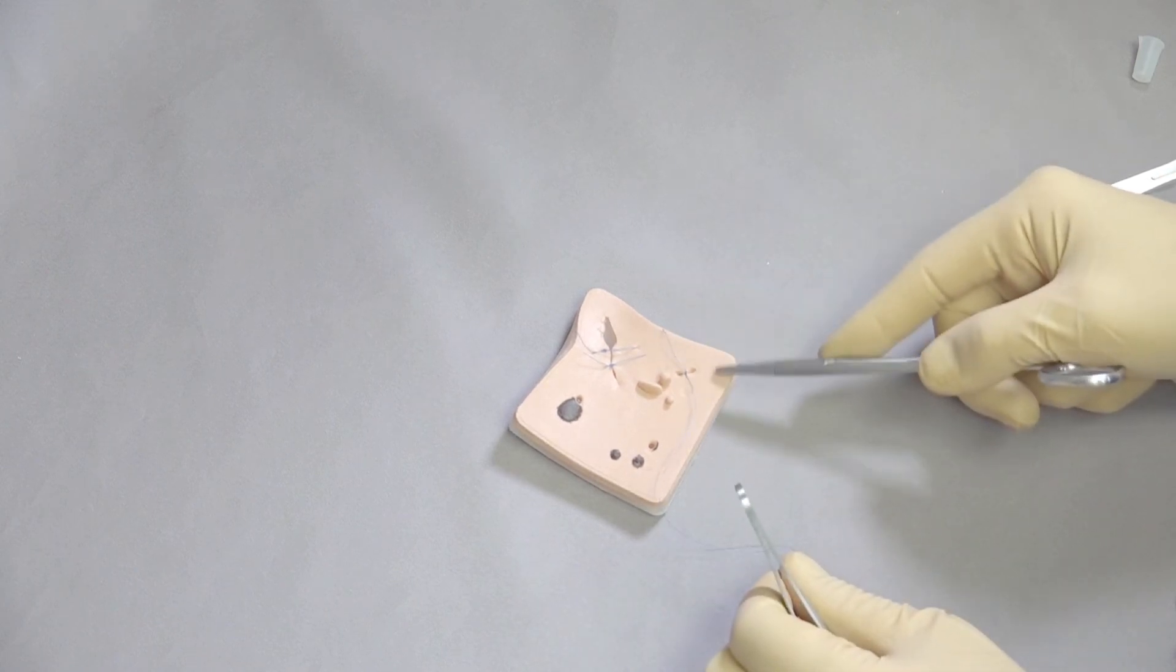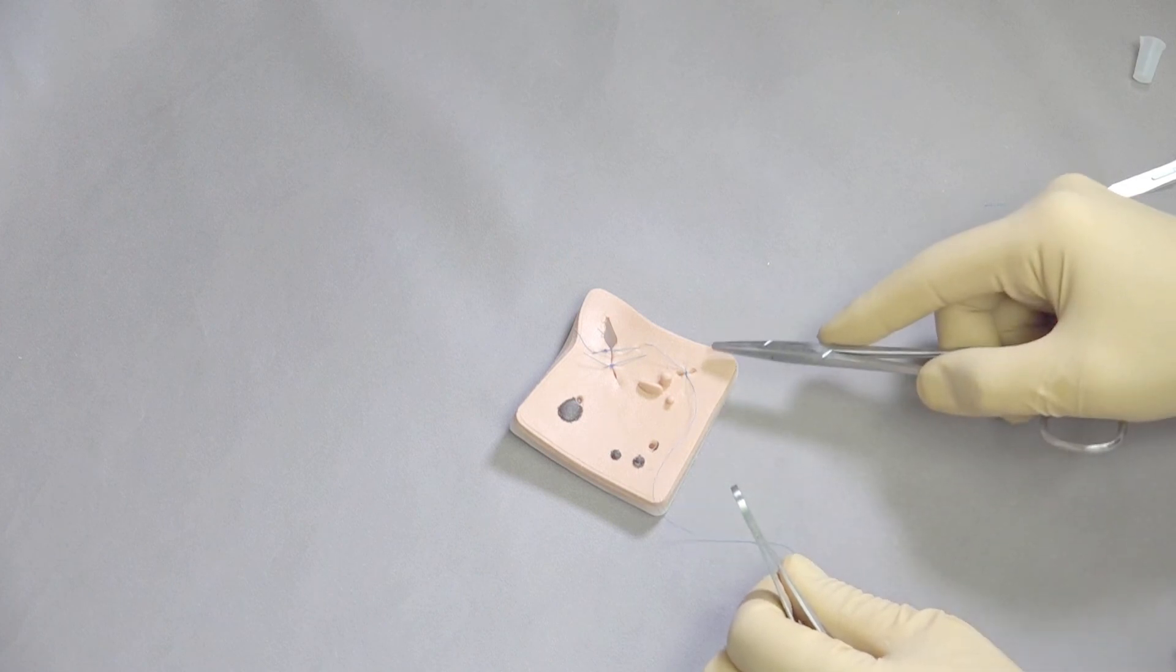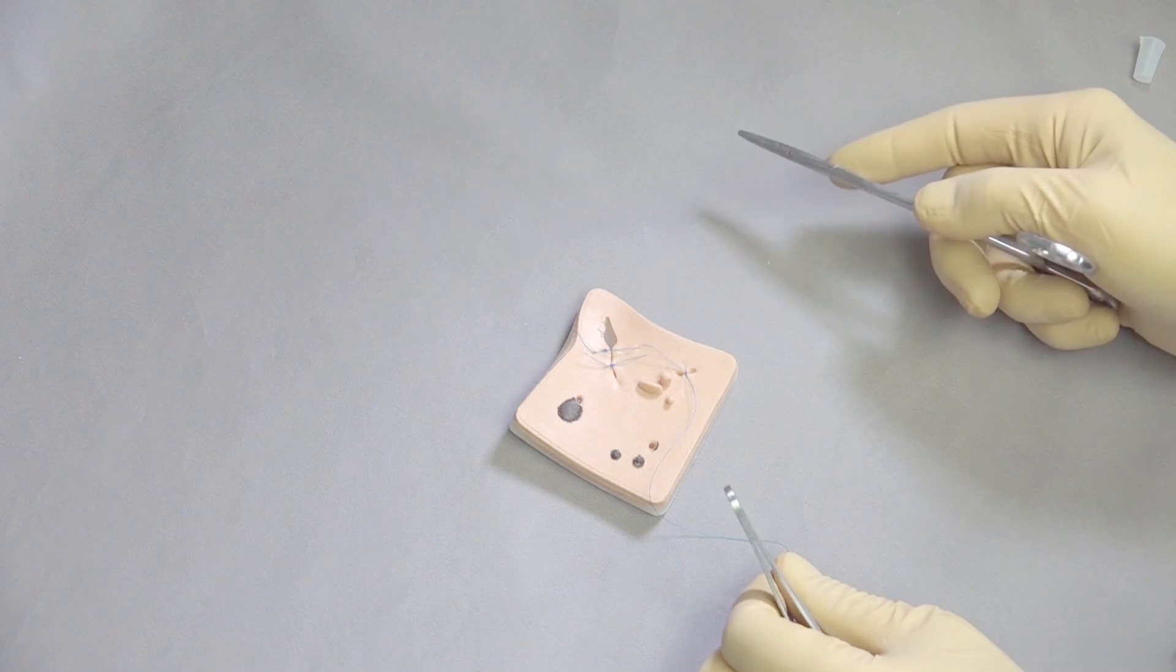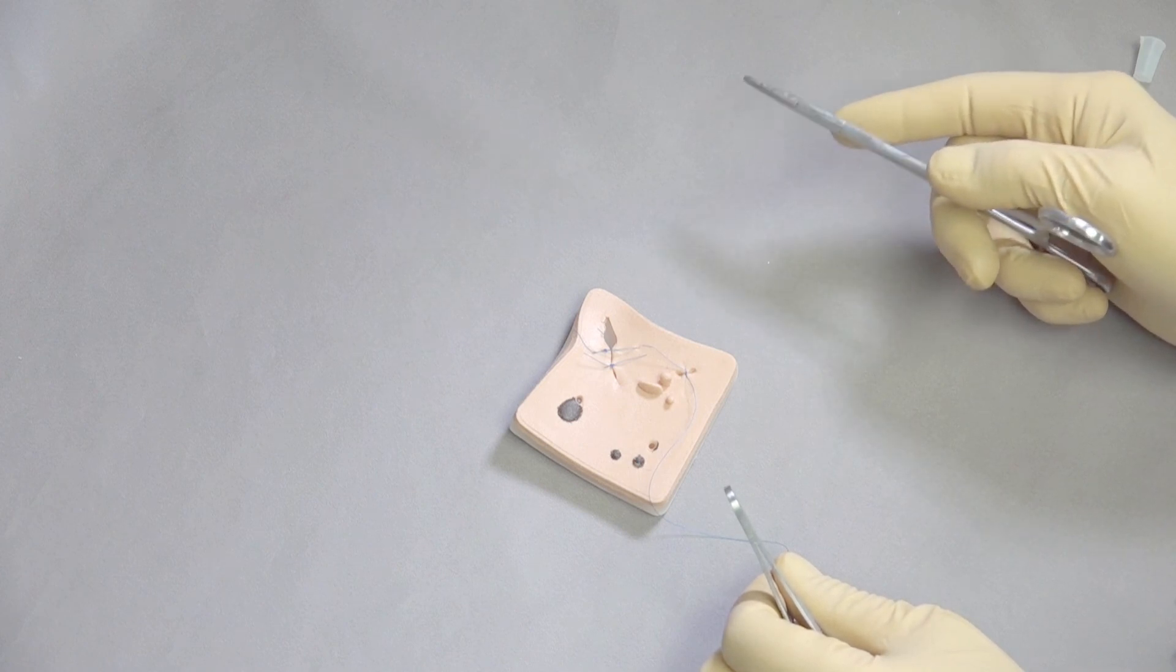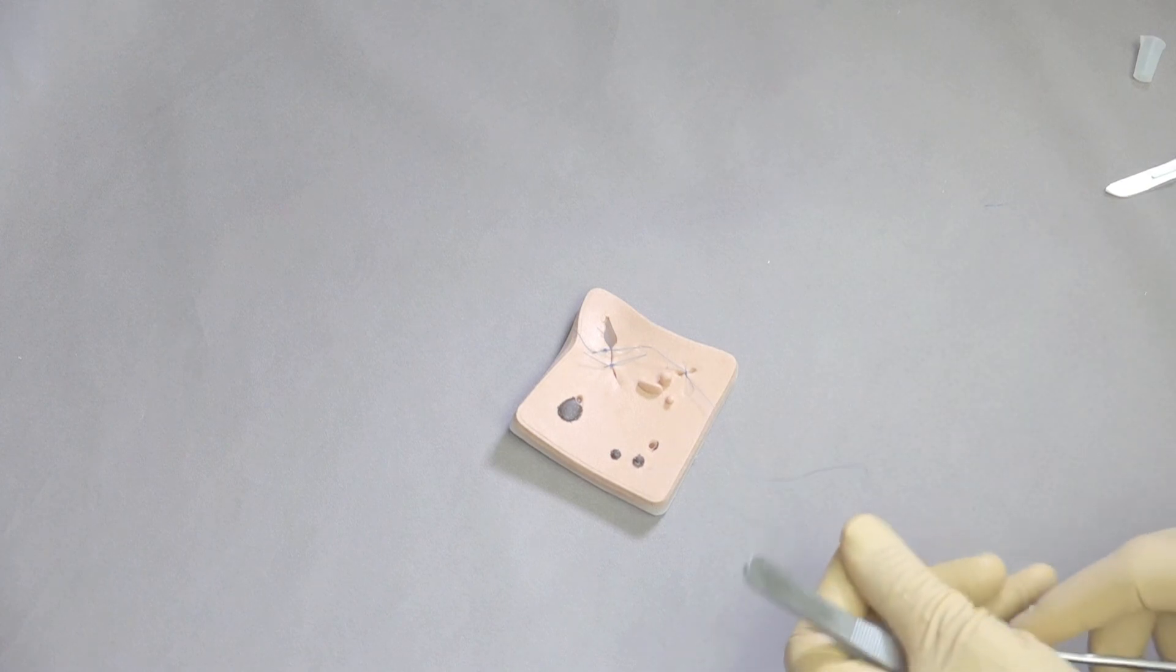So again a single interrupted suture pattern should bring that together quite nicely. And again if you don't like that you can always put two in there. So it gives you a chance to practice, see what you're doing. Encourage you to try things. Perhaps put one in and see if it works, and if it doesn't put a second one in. Or go ahead and start with two. Whatever you want to do, this is the time for you to practice that.